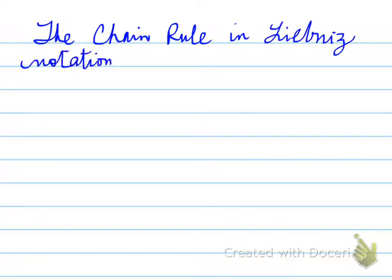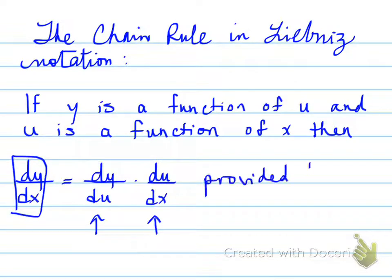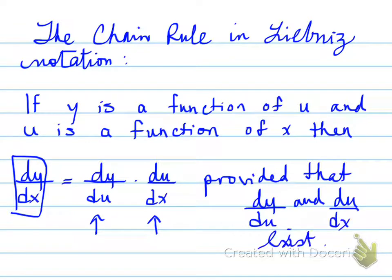The chain rule in Leibniz notation can be written as follows. If y is a function of u and u is a function of x, then dy by dx is equal to the combination dy by du times du by dx, obviously provided that dy by du and du by dx both exist. Note that these are y's, so there's a y here and there's a y here versus these are u's. So very, very important. So the chain rule dy by dx is equal to the derivative of y with respect to u times the derivative of u with respect to x. So let's look at examples of this.